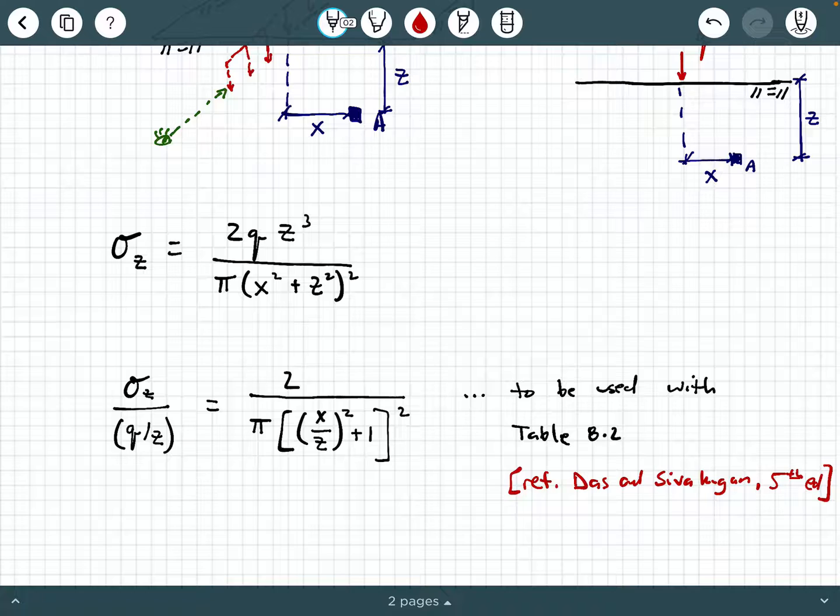And so what's helpful about this particular table is you can enter in to their table 8.2 with an X over Z ratio, and then a Sigma divided by Q over Z value. And you can pull out an influence value for the function and easily be able to calculate Sigma Z without having to punch through all of this version of the equation. But if you punch it through correctly and you do all your algebra correctly, you should get the exact same thing because all this non-dimensional form is is just a repackaging of this above equation.